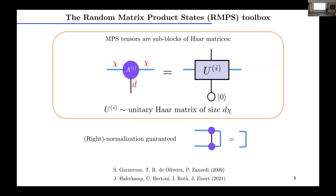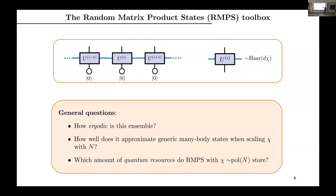For people familiar with this, it guarantees the overall normalization of the state. These are unitaries of dimension d times chi. This model has been studied previously, introduced by Zanardi and collaborators, and also studied in other works. The general questions we will explore are: is our ensemble ergodic — how well does it approximate any generic many-body state when we scale the bond dimension with system size N — and which amount of quantum resources should you expect from a random MPS?